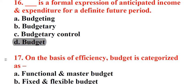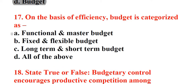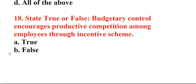Question 17: On the basis of efficiency, budget is categorized as. A. Functional and master budget, B. Fixed and flexible budget, C. Long-term and short-term budget, D. All of the above. Answer: B. Fixed and flexible budget. Question 18: State true or false. Budgetary control encourages productive competition among employees through incentive scheme. A. True, B. False. Answer: A. True.